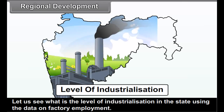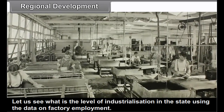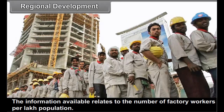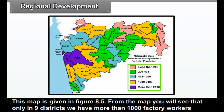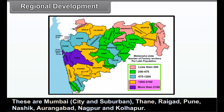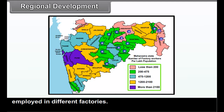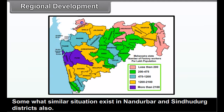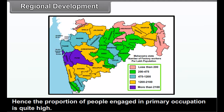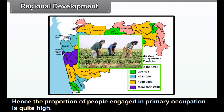Let us see the level of industrialization in the state using data on factory employment — specifically, the number of factory workers per lakh population, shown in figure 8.5. From the map, only 9 districts have more than 1,000 factory workers per lakh population: Mumbai City and Suburban, Thane, Raigarh, Pune, Nasik, Aurangabad, Nagpur, and Kolhapur. Certain districts in central and eastern Maharashtra have even less than 500 persons out of 1 lakh employed in factories. A somewhat similar situation exists in Nandurbar and Sindhudurg districts. Hence, the proportion of people engaged in primary occupations is quite high.